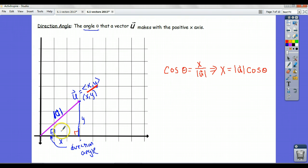Similarly, in the picture, the sine of the angle is y over the magnitude of u. If you multiply both sides by the magnitude of u, y equals the magnitude of u times sine of theta.